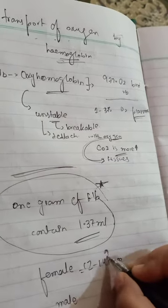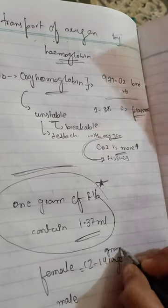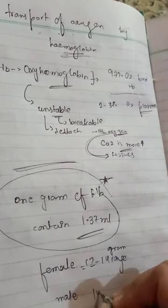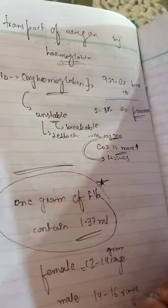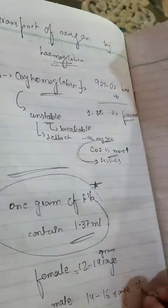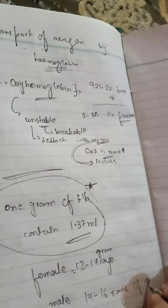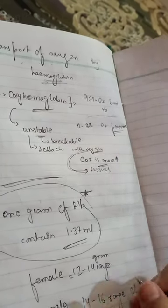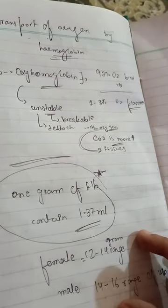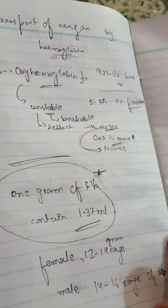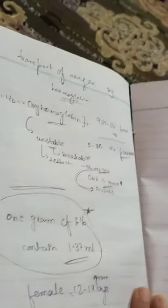In females, the normal hemoglobin range is 12 to 14 grams, and in males it is 14 to 16 grams per 100 mL of blood. This means males have a higher normal hemoglobin level than females. There are many MCQ questions based on this. One gram of Hb contains 1.37 mL of oxygen.